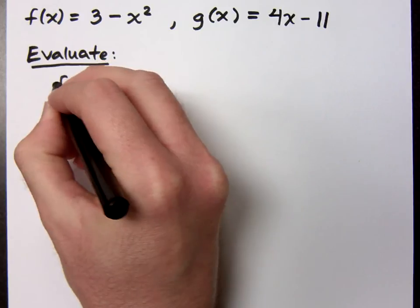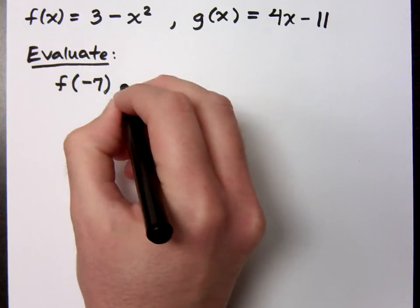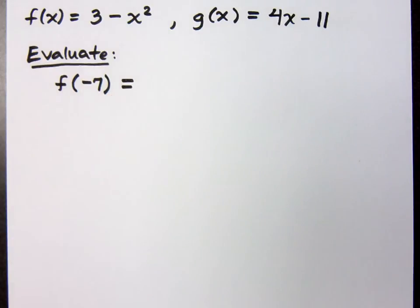If I say evaluate f of negative 7, what do you think that means? f is not negative 7. f is the name of the function. x is negative 7. I'm going to replace x with negative 7.